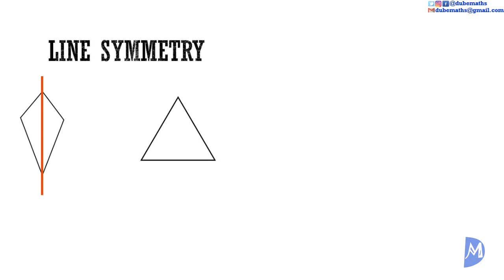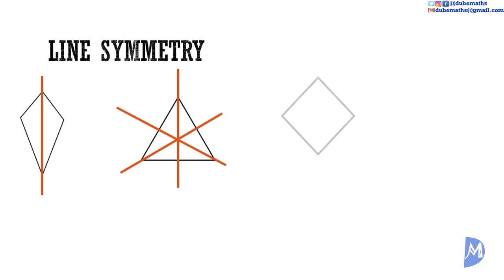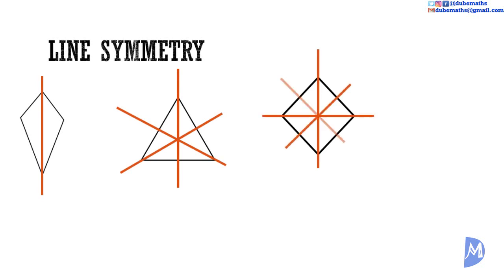The kite has one line of symmetry. The equilateral triangle has three lines of symmetry.